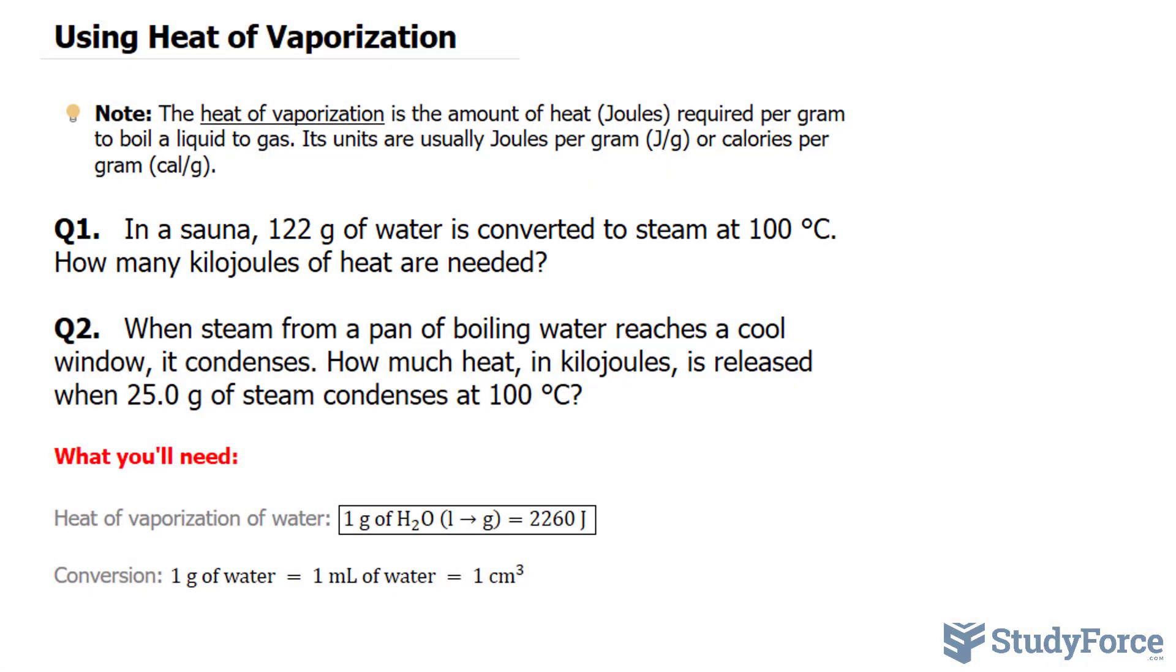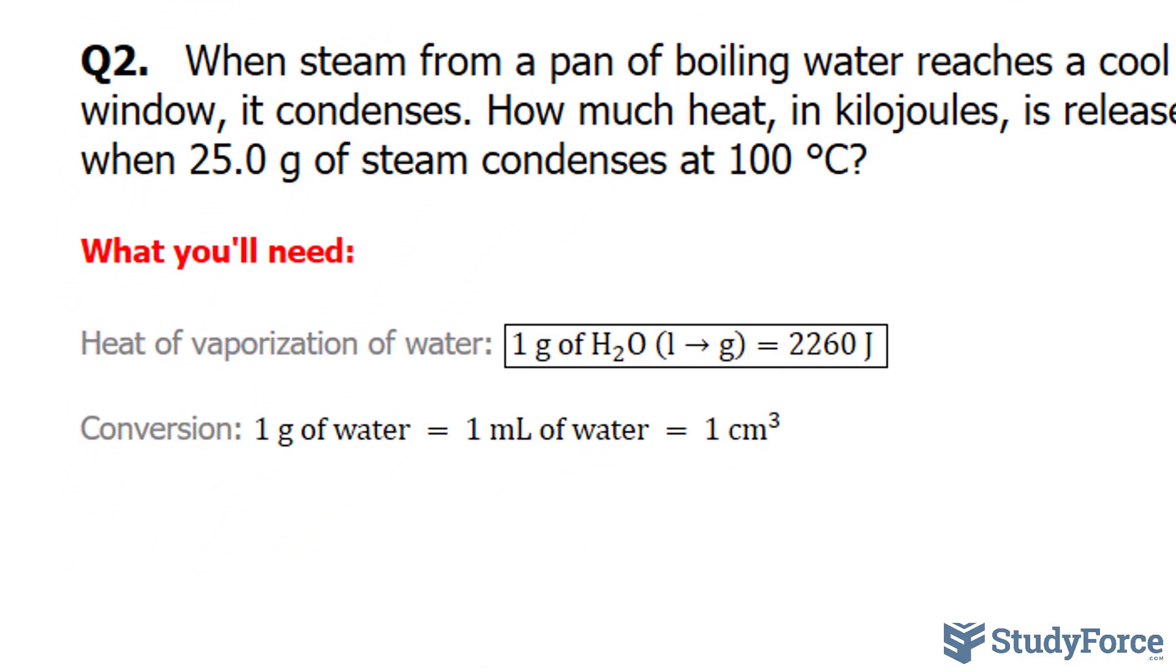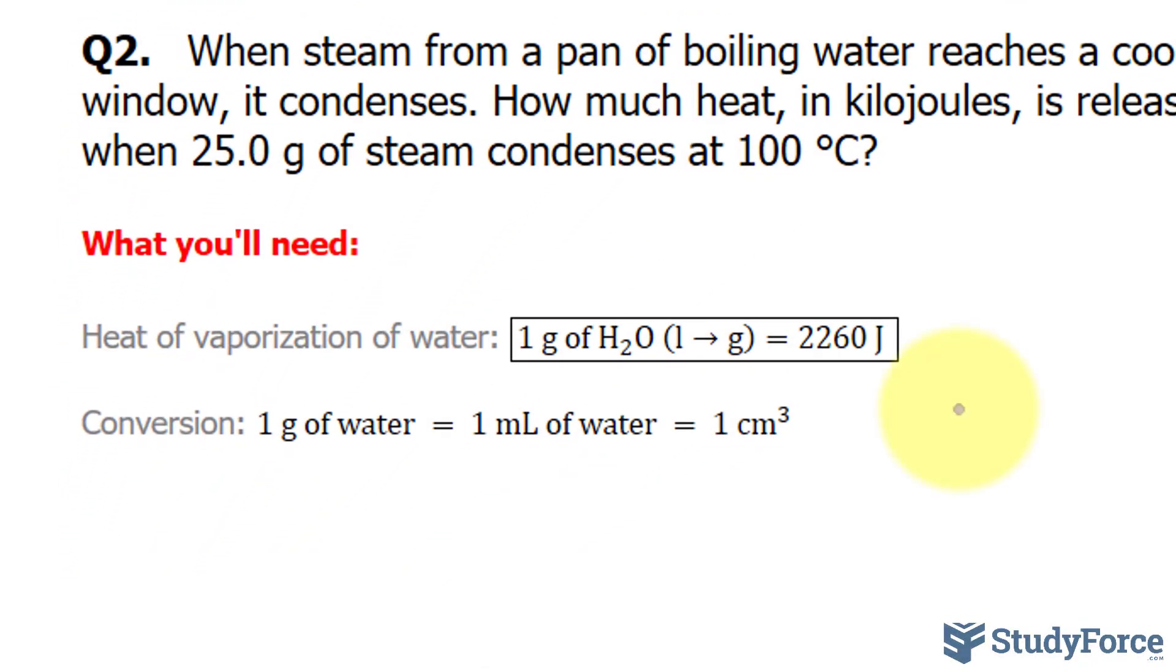In order to be successful with these types of problems, you'll need to know a constant. The constant is shown underneath. The heat of vaporization of water is: in order to convert one gram of water from liquid to gas, you need 2260 joules.